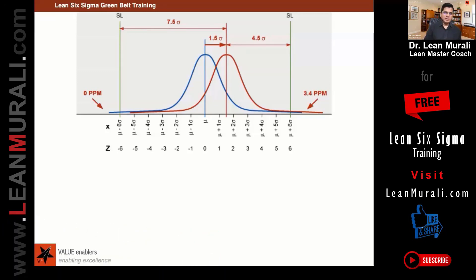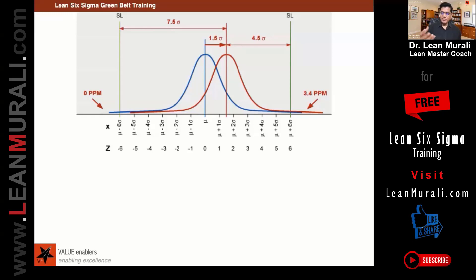For example, if you keep using a grinder for grinding your floor, the variation will increase. That is called a shift of 1.5 sigma.